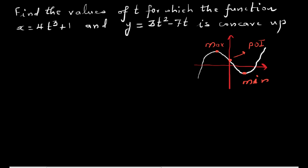This area is called concave up. For this area, the second derivative d²y/dx² has to be greater than zero. For the concave down area, the second derivative is less than zero. So the question is: for which value of t is the function concave up?